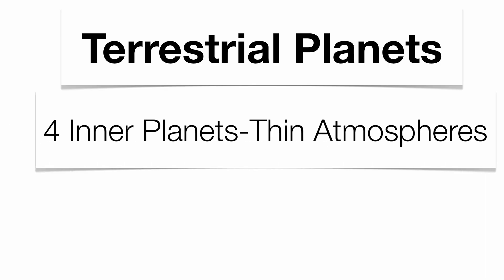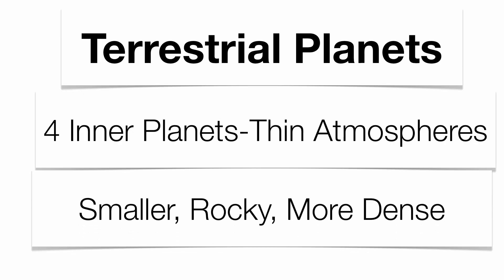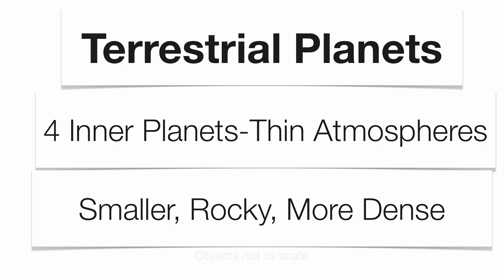Now there are two groups of planets. The first group are called terrestrial planets. They're the four inner planets: Mercury, Venus, Earth, and Mars. They tend to have thinner atmospheres, they tend to be smaller in nature, more dense, and tend to have a very rocky surface.